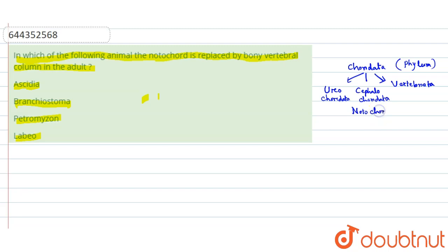Notochord is a very important characteristic. Afterwards, it will completely turn into vertebral columns or spine in the animal group.